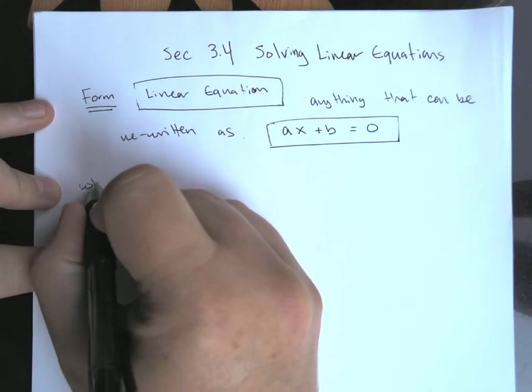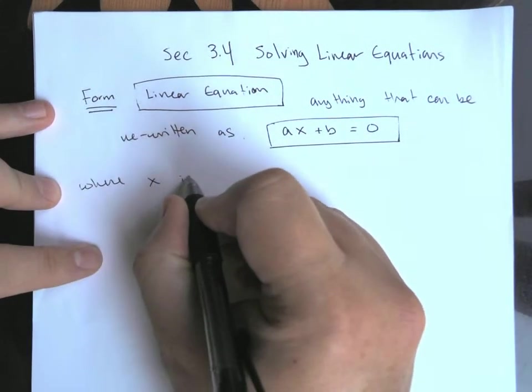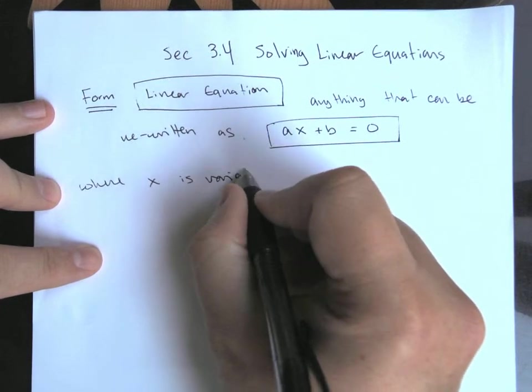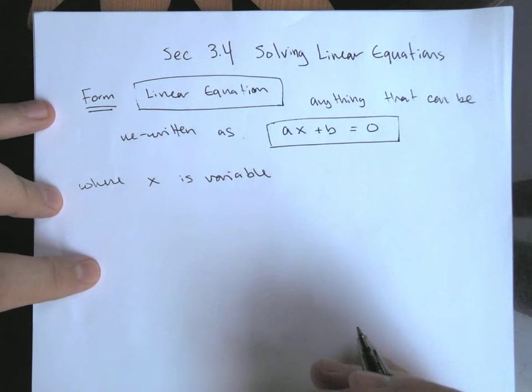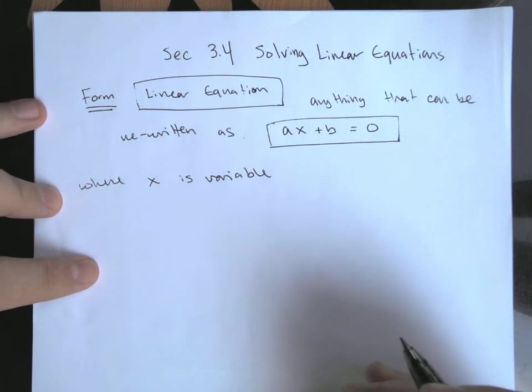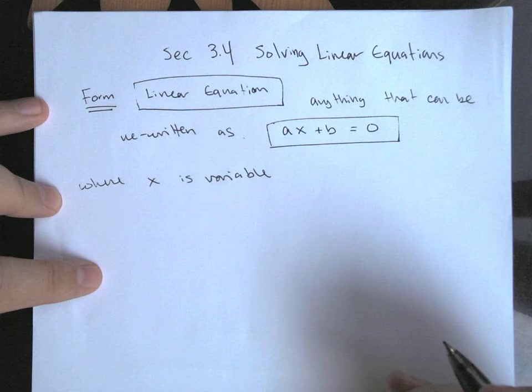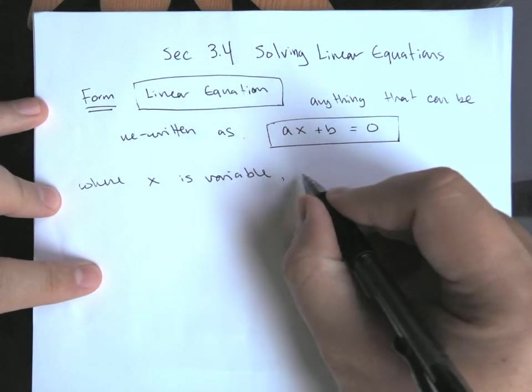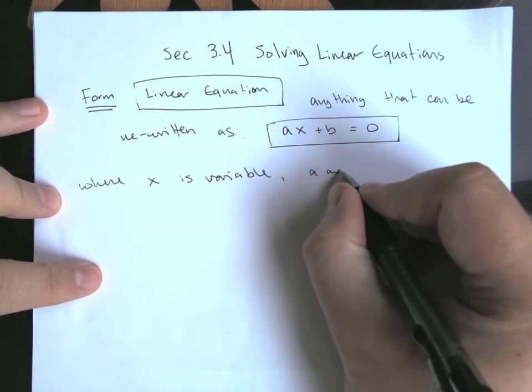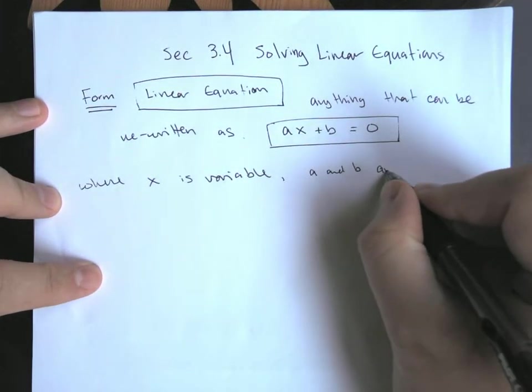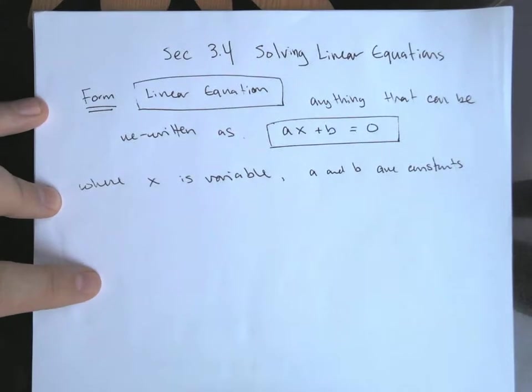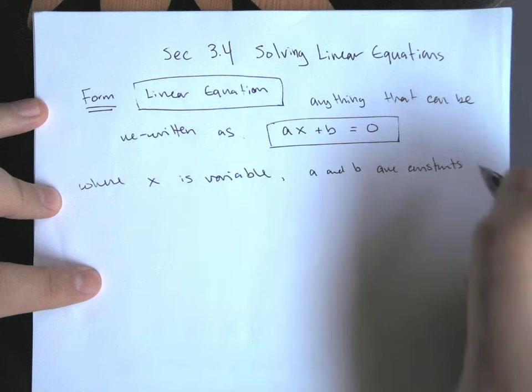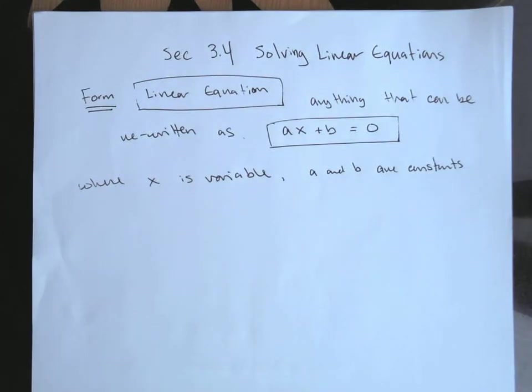And so this is where X is our variable. So if this is an equation, obviously we need an equal sign, we're going to need a variable. So in this case, AX. That's what we would try to solve for if we're trying to solve the equation, which is what we're going to do in this section. And then A and B are constant values. So some number values. So A and B are numbers, X is a variable.